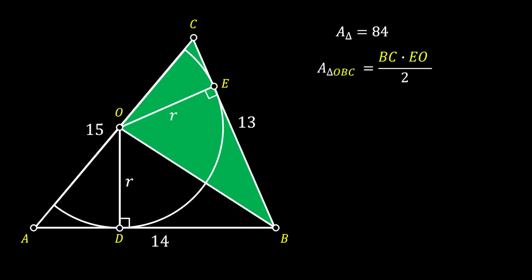The area of this triangle will be equal to the product of its base and height divided with two. In our case, that is BC times EO over two. If we substitute our values, we will get that this area is equal to 13R over two.